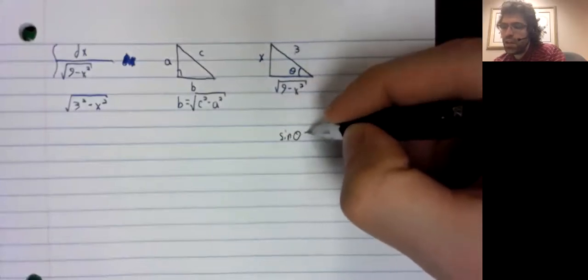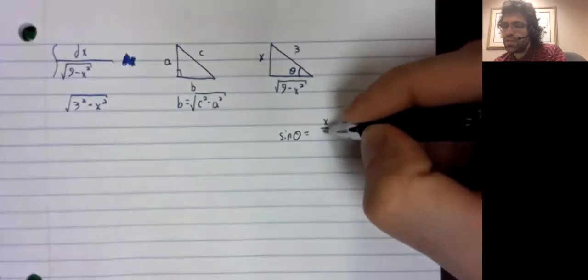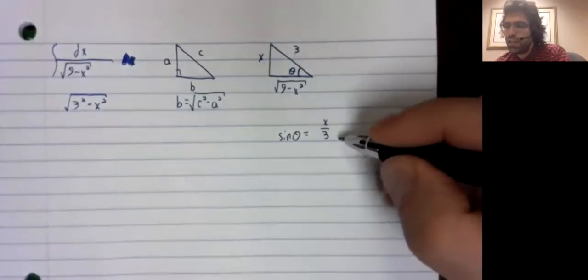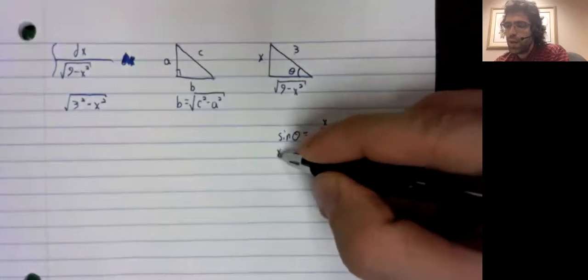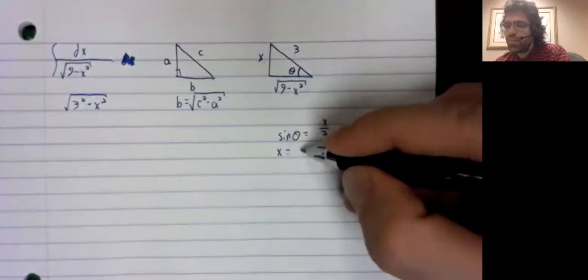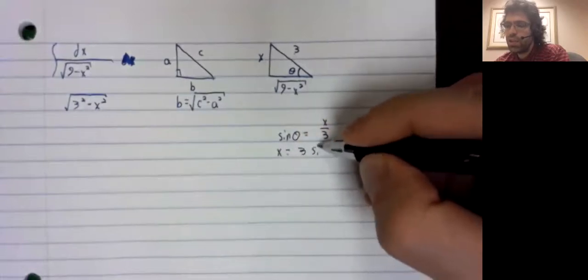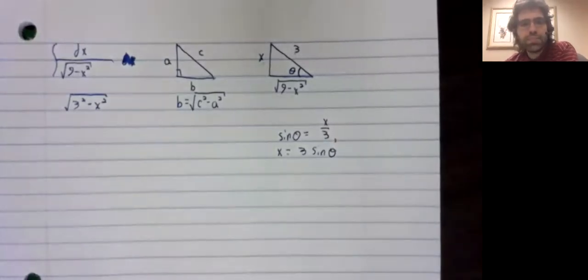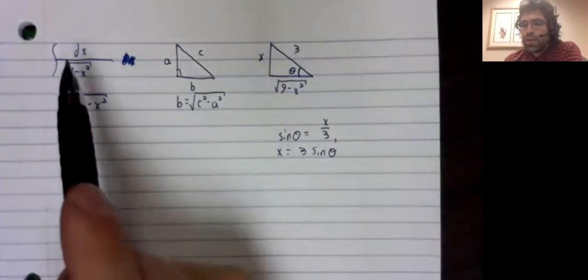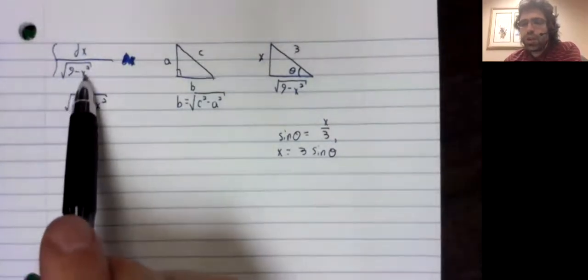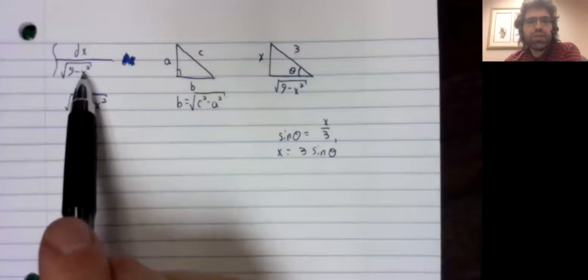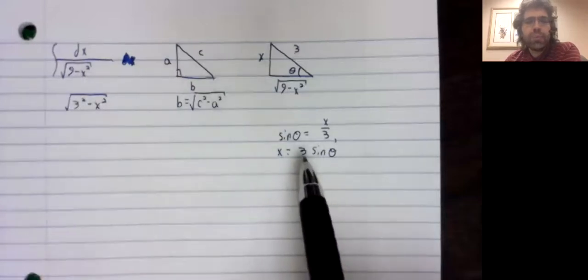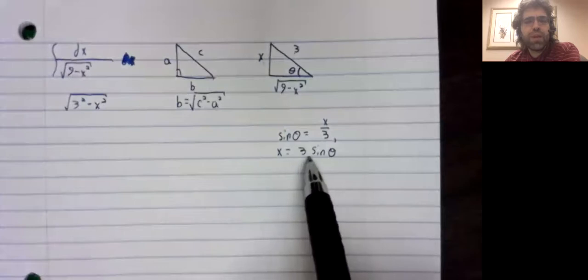The sine of theta is X divided by three. So X equals three times the sine of theta. And then we have another brain wave. What if we took the X that appears in this integral and we replaced it with this? Is there any chance that that could give us something nice?